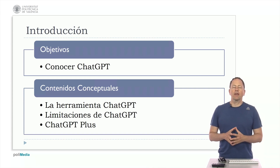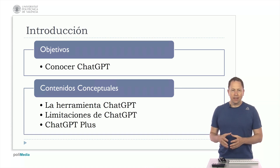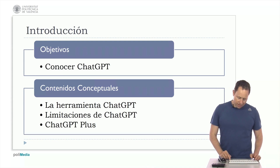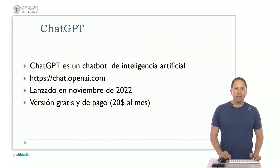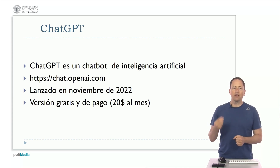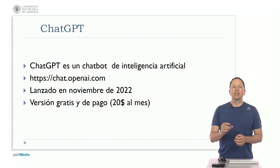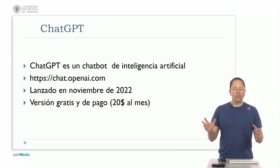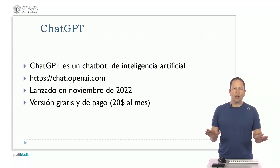ChatGPT is what is known as a large language model — an artificial intelligence model, a chatbot, meaning it is a program designed to interact with users based on artificial intelligence. It is based on GPT, which stands for Generative Pre-trained Transformers, a technology based on neural networks. But all of that doesn't matter, because what's important here is for you to see what you can do with it.